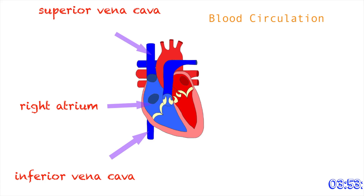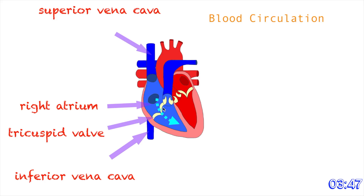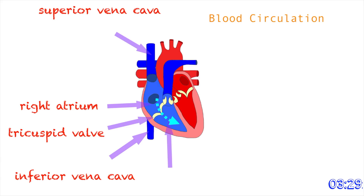From the right atrium, the blood goes to this chamber right here, but it would pass this structure called the tricuspid valve. It's called the tricuspid valve because it contains three cusps. The way you're going to remember that the tricuspid valve is on the right side of the heart is that it kind of sounds like 'right.' So the tricuspid valve is found on the right side of the heart. When the blood passes the tricuspid valve, the blood then enters this chamber right here called the right ventricle.